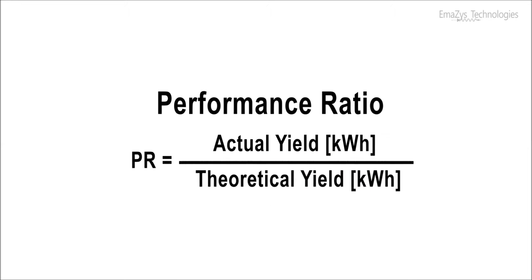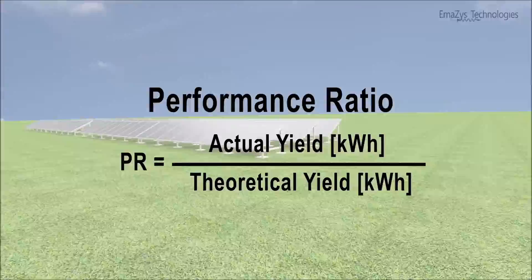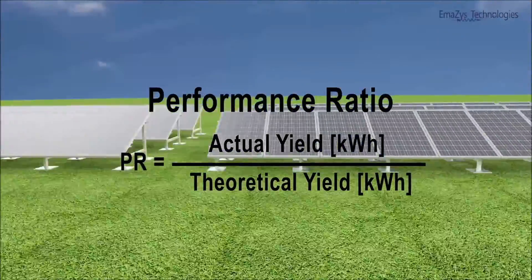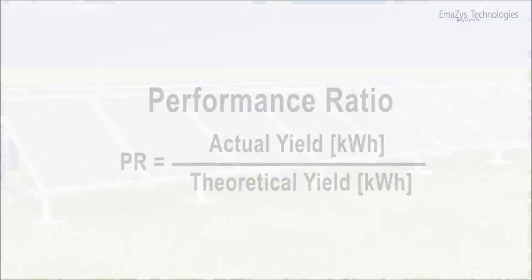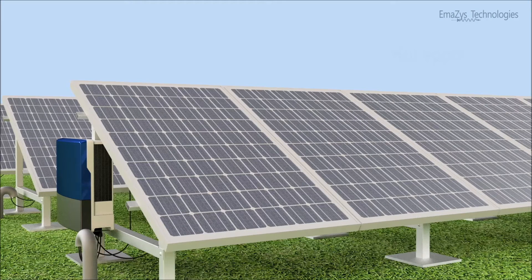PV system return on investment relies on the highest possible performance ratio, which is the ratio between expected and actual energy harvest. Yield is lost due to faults and degradation, which negatively affects the performance ratio.